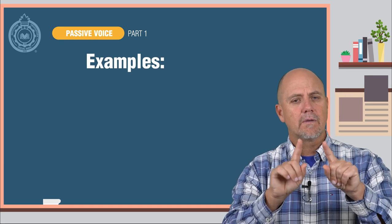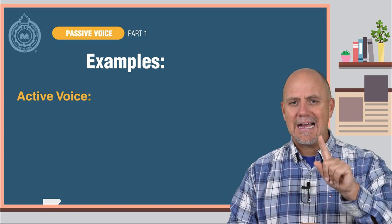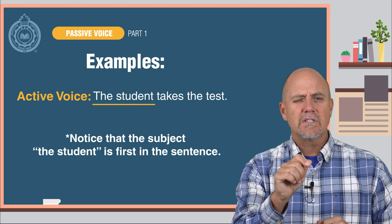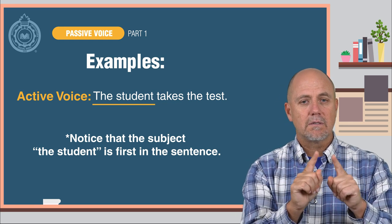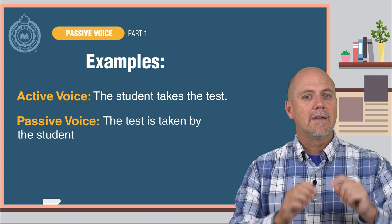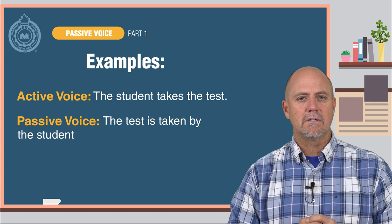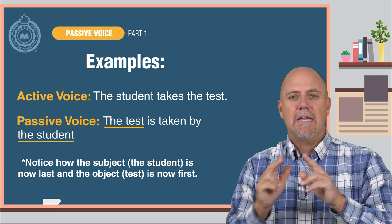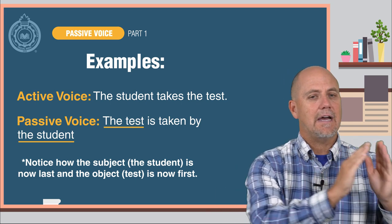Watch again with these examples. Active voice: The student takes the test. Notice that the subject, the student, is first in the sentence. Now the passive voice: The test is taken by the student. Notice how the subject, the student, is now last. And the object test is now first.